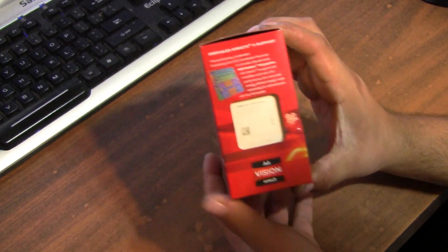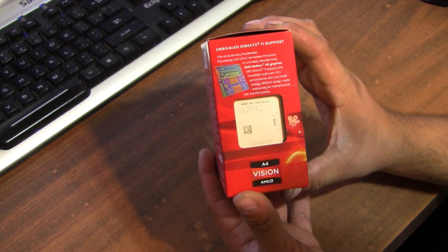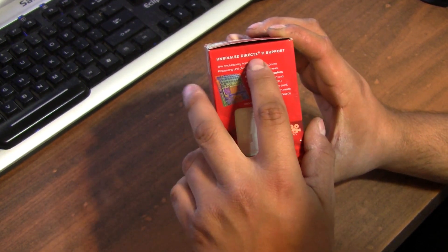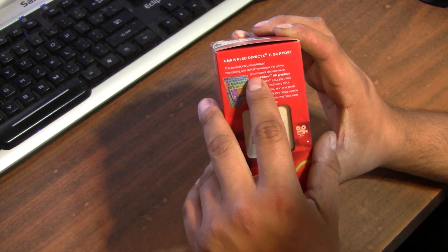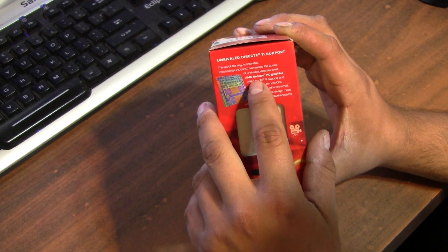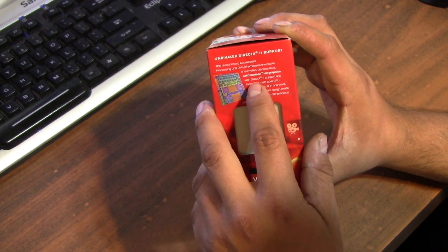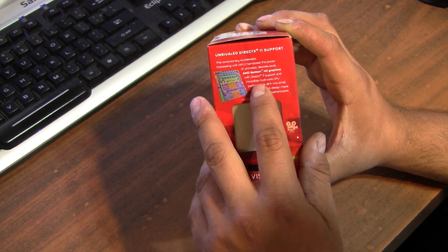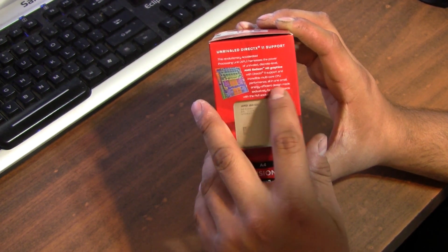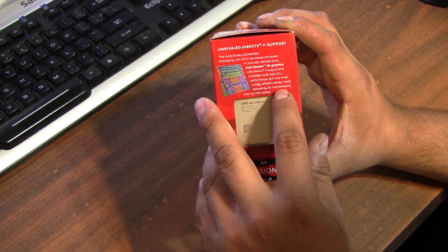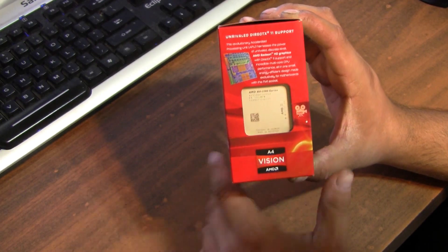So there's the back of the box, here's the side. It says here unrivaled DirectX 11 support. This revolutionary processing unit APU harnesses the power of unrivaled discrete level AMD Radeon HD graphics with DirectX 11 support and incredible multi-core CPU performance, all in one small energy efficient design, made exclusively for motherboards with the FM1 socket. You can actually see the socket there.